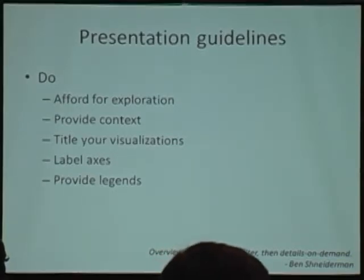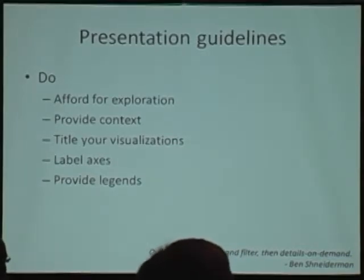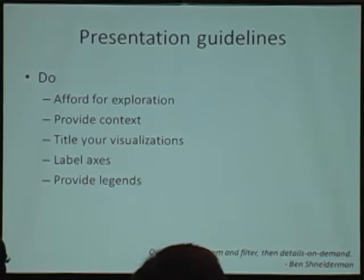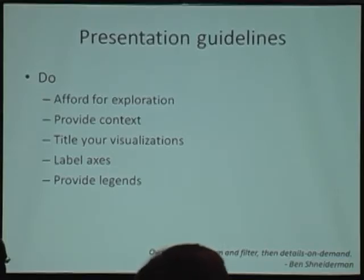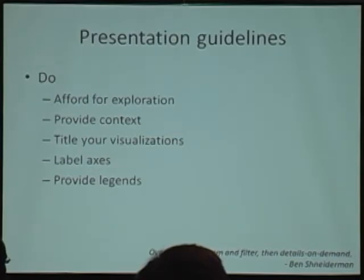That's for interactive visualizations. The next four points are for any visualization at all, and they seem somewhat obvious, but people forget to do them — I know I forgot to do them in some of these examples. I clipped the titles and axis labels. You should provide context for your visualizations, provide information so people know what they're looking at, title and label your axes, and provide legends.